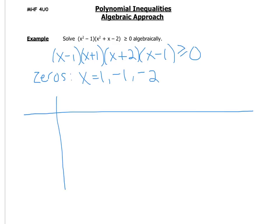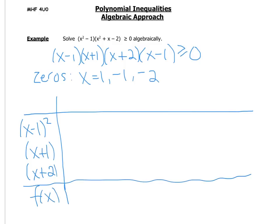So this is how I like to set it up. Along the left, we're going to list all of the factors. If we have one twice, we need to either list it twice or we need to list it as a squared. So notice we have (x - 1)^2. Then we have an (x + 1). And then we have an (x + 2). If you had a coefficient, you would want to put that in there as well. And then at the bottom here, we're going to have our overall sign of f(x). And then we're going to start setting up our columns. So we want to separate the graph or the function into intervals using all of these zeros.